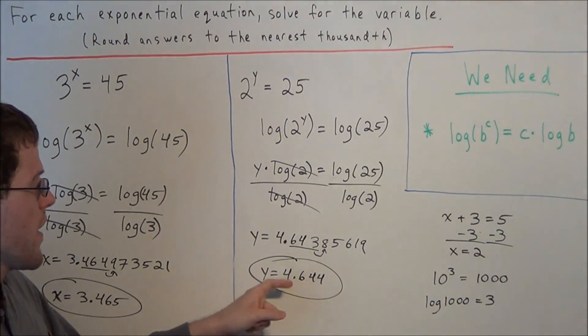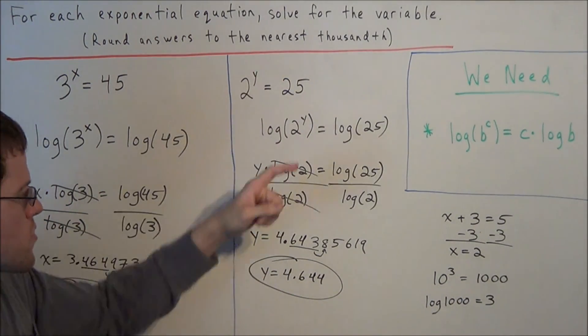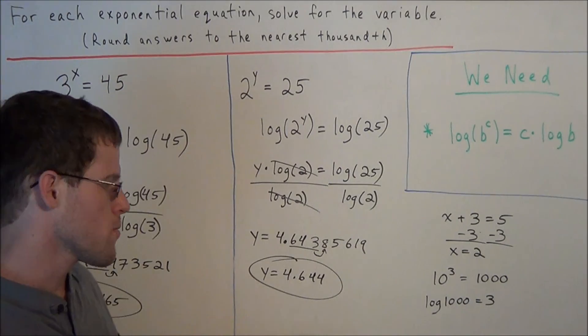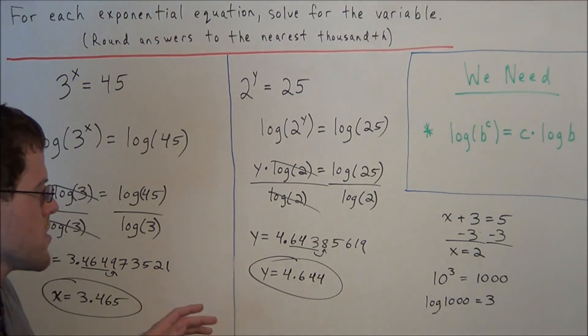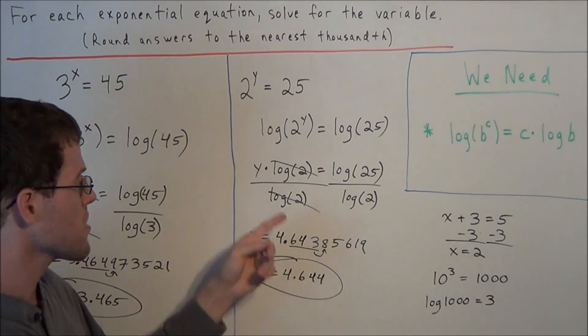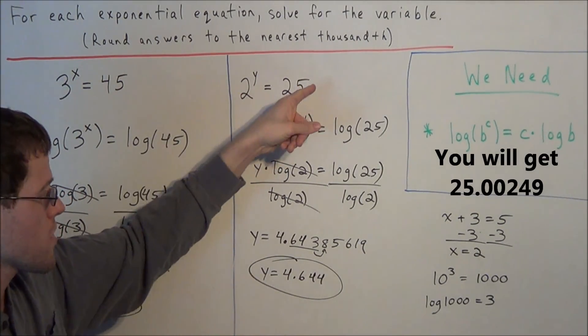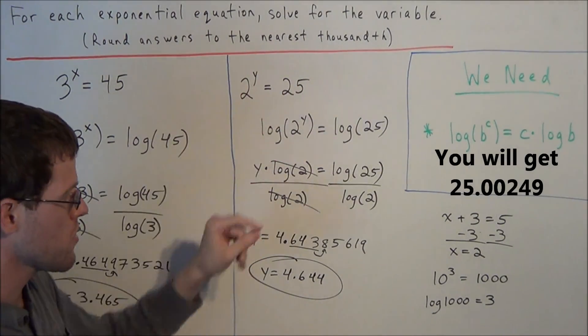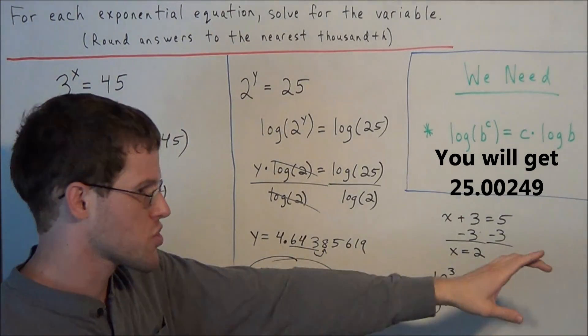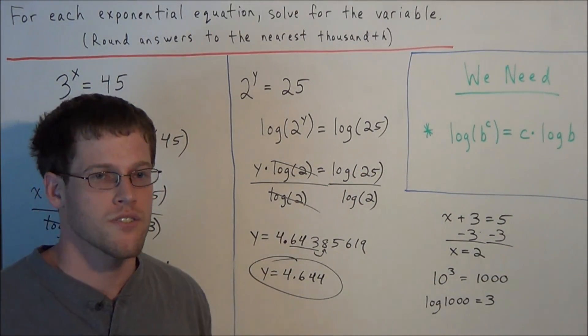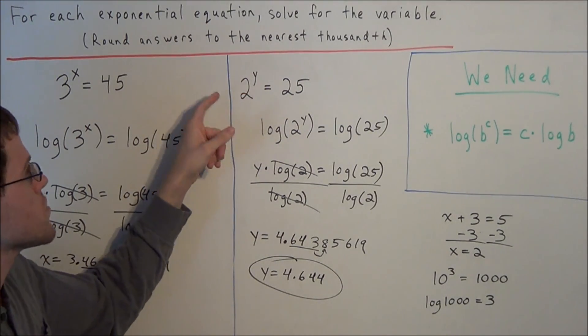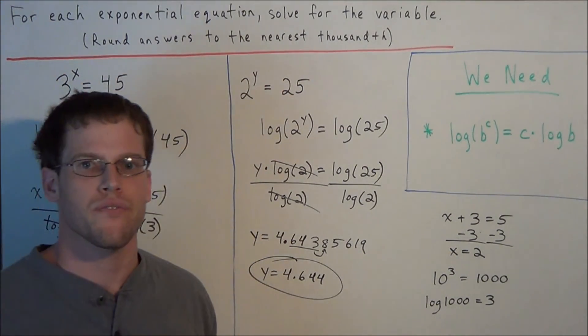And this is going to be our final answer to the problem. 2 to the y equals 25, we have y equals 4.644 when we round to the nearest thousandth. And once again you can plug this answer in for y, you'll get something really close to 25. If you want to get exactly 25, plug in the entire string that you got from doing log 25 divided by log 2 and you'll get 2 to that power equals exactly 25.